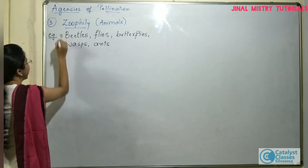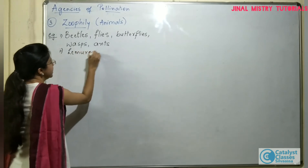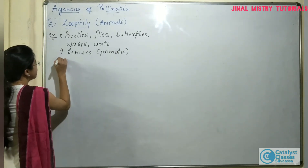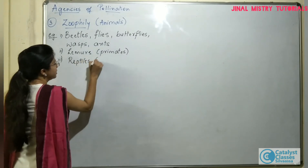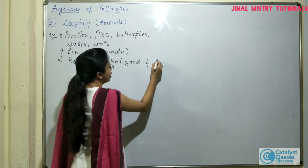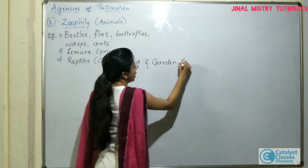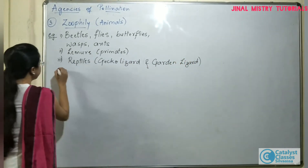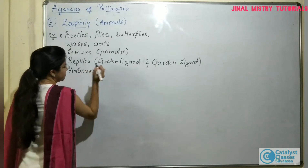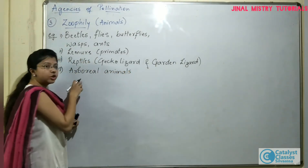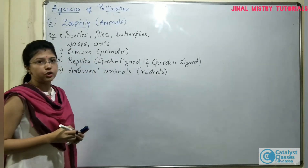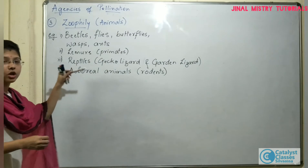Apart from that, you will also find certain animals like lemurs. Basically, they are primates, and these primates are also involved in pollination. Then you can find certain reptiles like the gecko lizard, or the garden lizard, which are involved as pollinating agents. Then you can find certain arboreal animals like rodents. Arboreal animals are those which are dwelling on trees, and they are also involved in pollination.